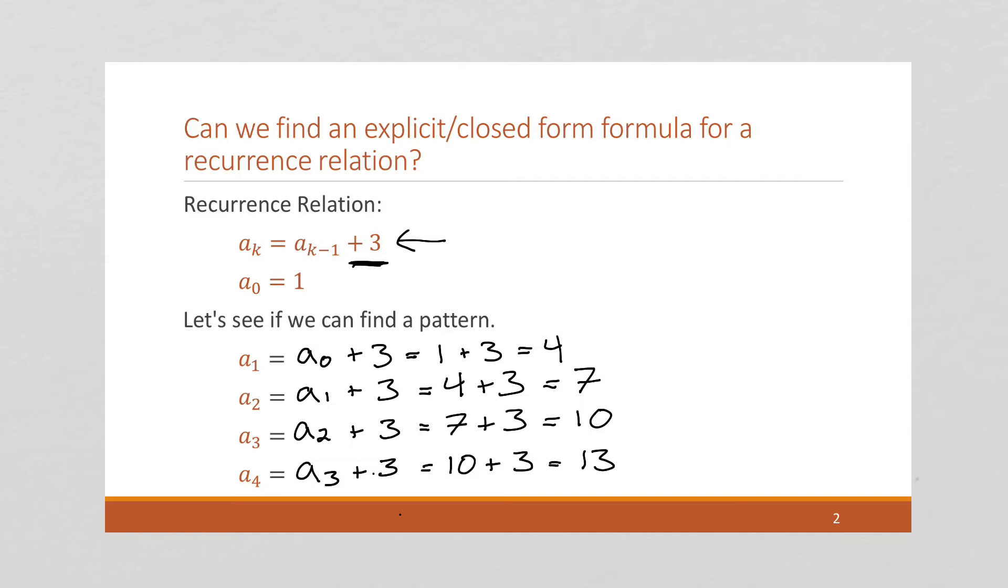But I don't see enough of a pattern to come up with an explicit or closed form formula. For a closed form formula, you really want to find a pattern. And I knew that these were 3 apart, that's what my recurrence relation says, but how do we put that into an explicit formula?